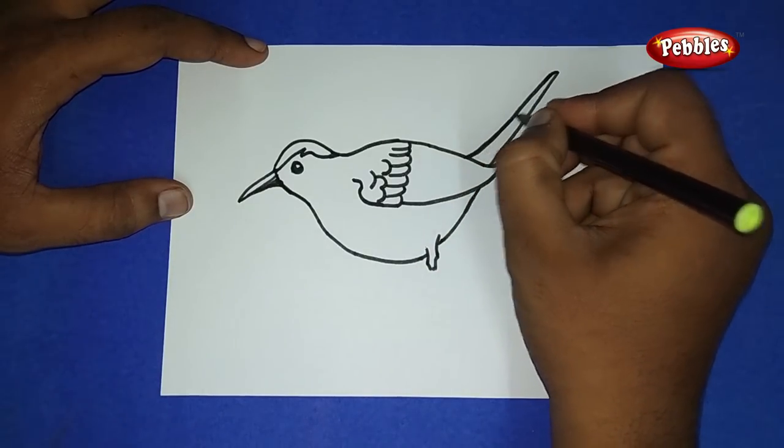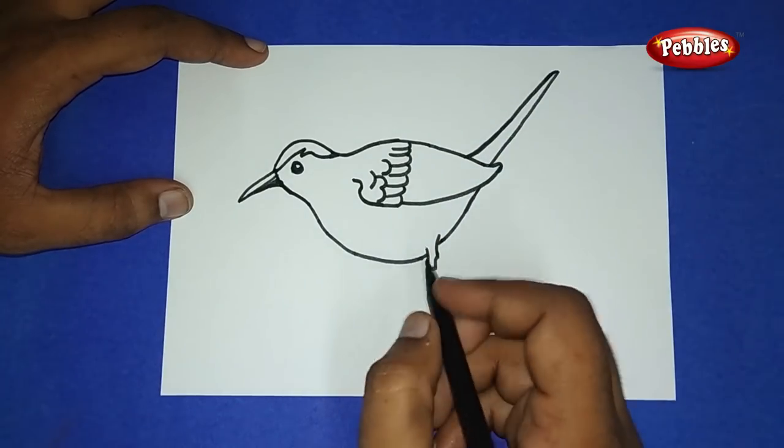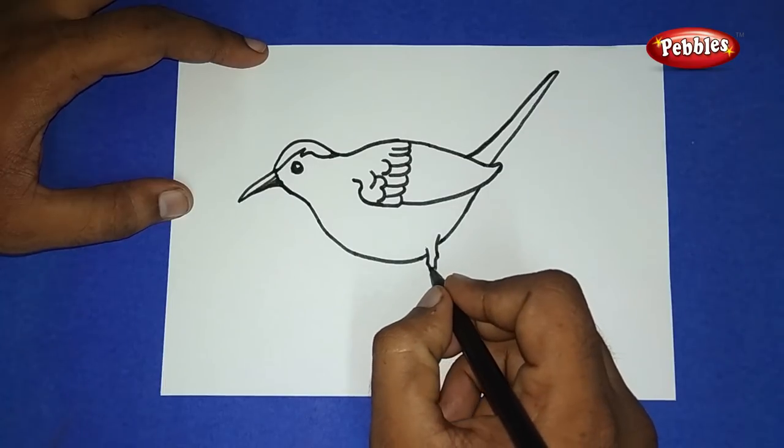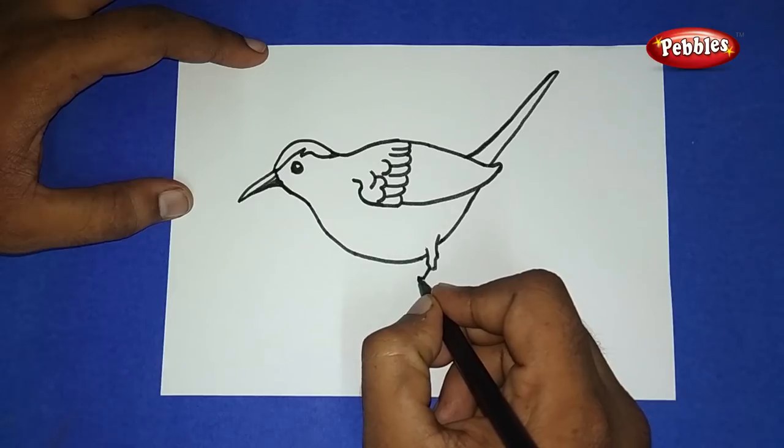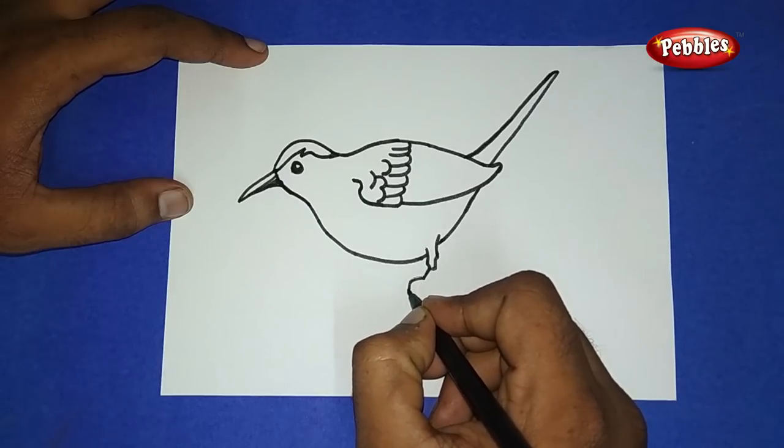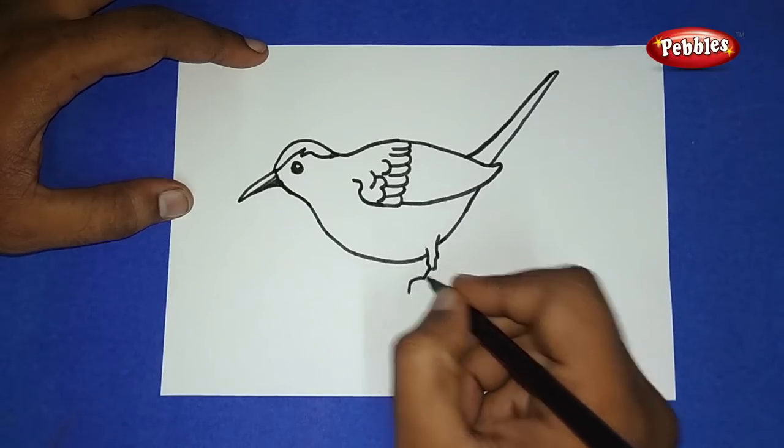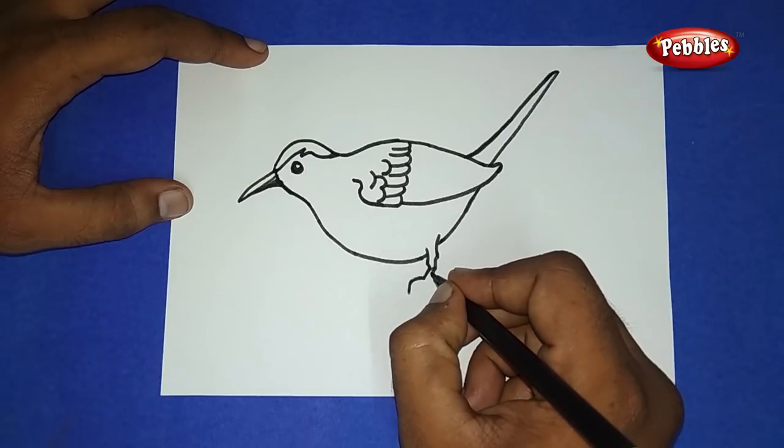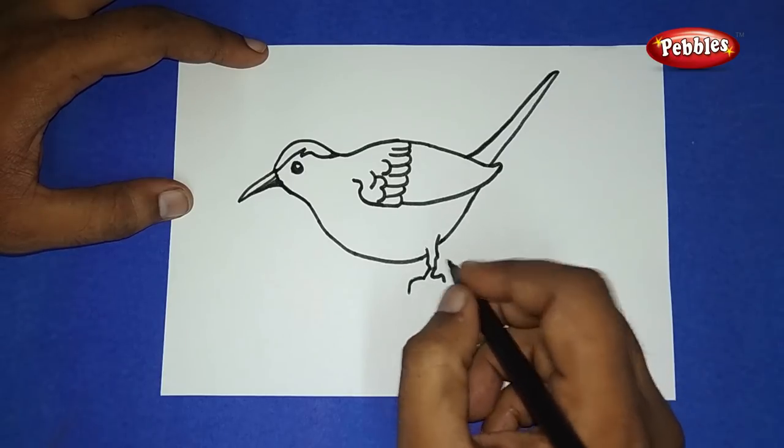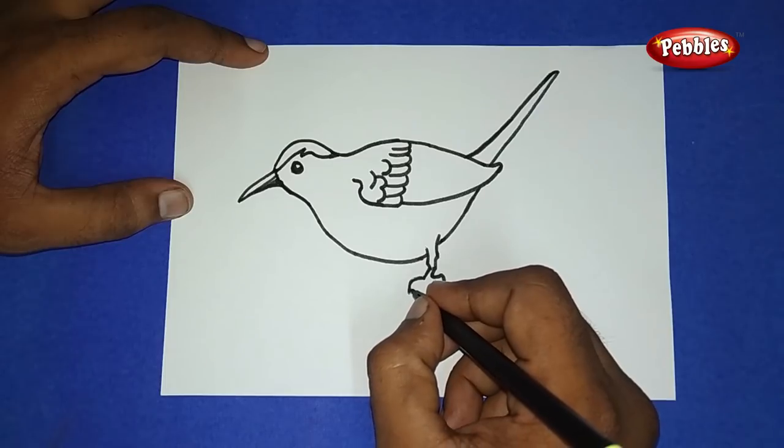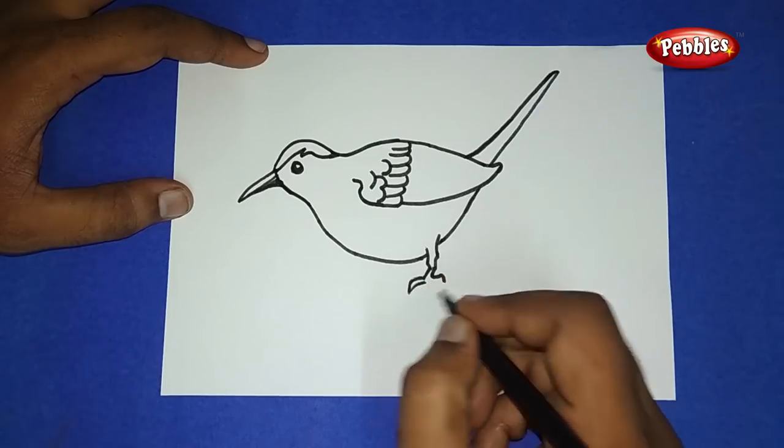At the bottom we have drawn a leg on the left side. Now draw the fingers very sharply.